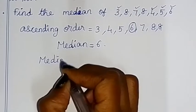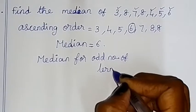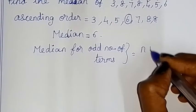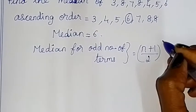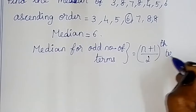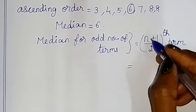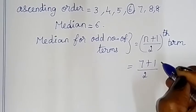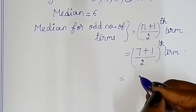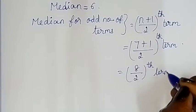Median for odd number of terms: we use the formula (n+1)/2 term. So if n is 7, that's (7+1)/2, which equals 8/2, which is the 4th term.